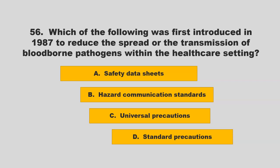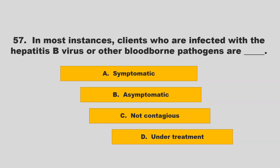Which of the following was first introduced in 1987 to reduce the spread or transmission of bloodborne pathogens within the healthcare setting? Options: safety data sheets, hazard communication standards, universal precautions, or standard precautions. The correct answer is C: universal precautions.